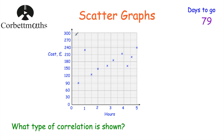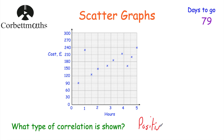Going back to our question with the plumbing jobs and the price, the question asks what type of correlation is shown. As you can see, this is a positive correlation — as the length of the job goes up, the cost increases as well. So the answer is positive correlation.